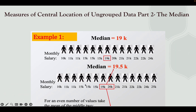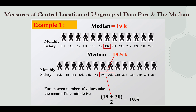Let's have an example. It's easy to identify the median or the middle score. We have here a sample — the monthly salary. Let's count the total number of data: 1, 2, 3, 4, 5, 6, 7, 8, 9, 10, 11, 12, 13 — that is odd. If you arrange it from lowest to highest data, you can easily identify the middle score. Since we have 13 data, the seventh data is your median, which is 19k.